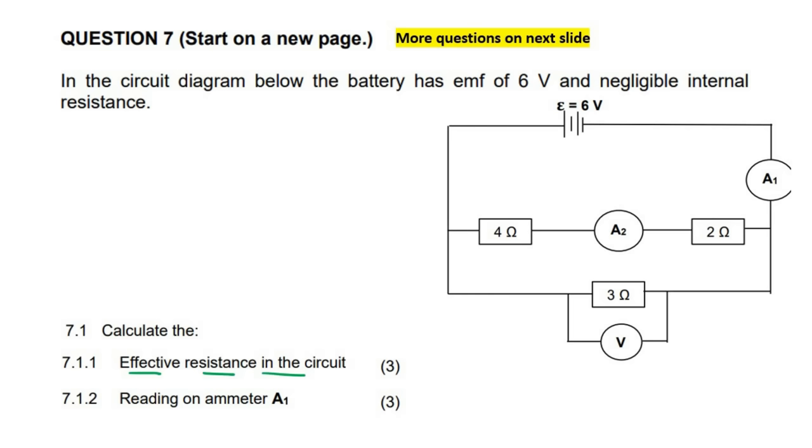What you need to understand is that conventional current goes out of the positive. When the current gets here, it decides it has to split. Some of it would go this way.